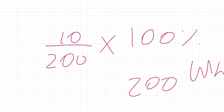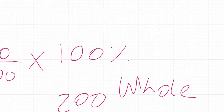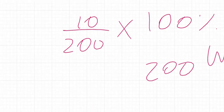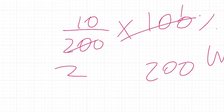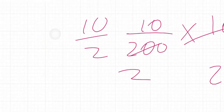So we get 10 over 200 times 100 percent. Simplifying: 200 divided by 100 is 2, so we have 10 divided by 2, which equals 5. So you would have spent five percent of the money. Finding a percent is just the reverse of finding the percent of something.